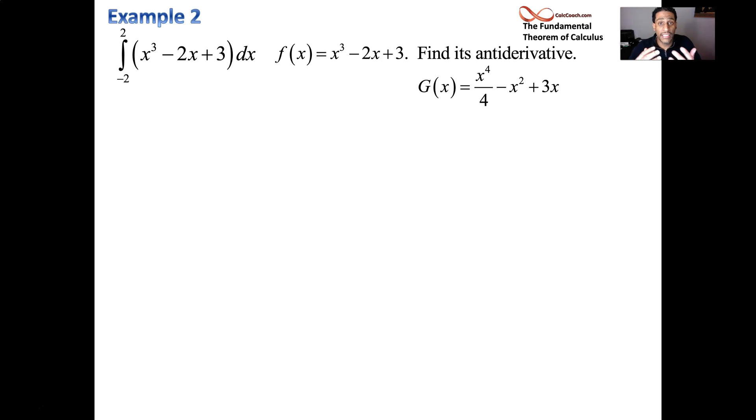So the antiderivative of negative 2x, you keep the negative 2, you get x squared over 2 by adding 1 to the exponent and divide it by the same thing. Those 2s cancel out and you just get x squared. Well, minus x squared because the sign in between them is a negative. And then anytime you have a constant, its antiderivative is that constant times x. Don't worry about the plus c. Our job, plug a 2 into this and then plug a negative 2 into this and subtract the result.